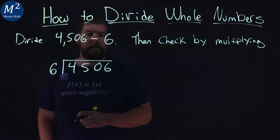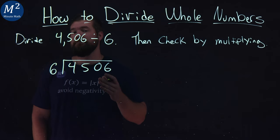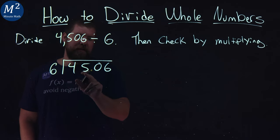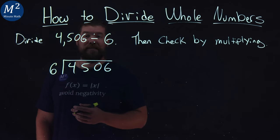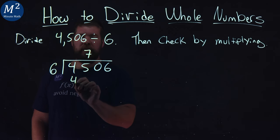I first look at 6 into 4. Does 6 go into 4? The answer is no. So the next two digits, 45 is what I'm looking at. Can 6 go into 45? The closest number I get is 42 by multiplying it by 7. 7 times 6 is 42.